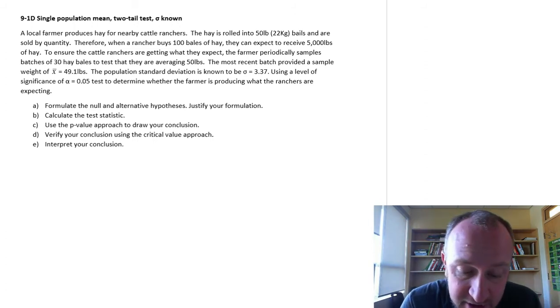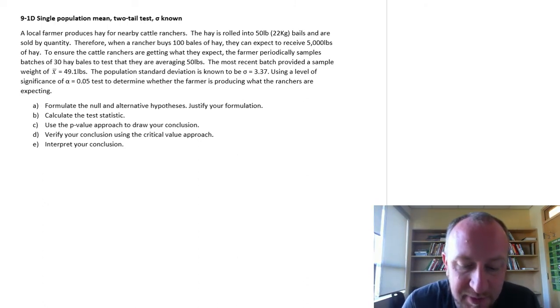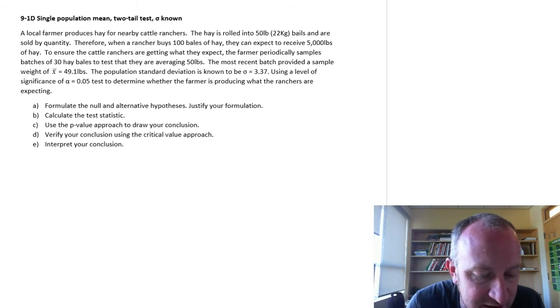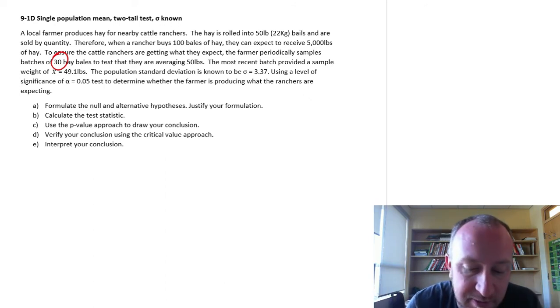Therefore, when a rancher buys 100 bales of hay, they can expect to receive 5,000 pounds of hay. To ensure the cattle ranchers are getting what they expect, the farmer periodically samples batches of 30 hay bales. That feels like a sample size. I'm going to circle that to test to make sure that they're averaging 50 pounds.